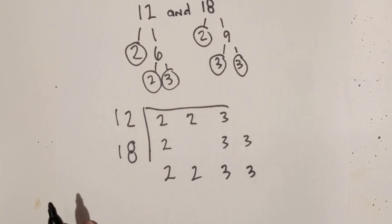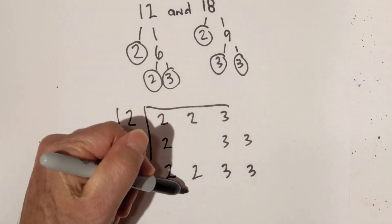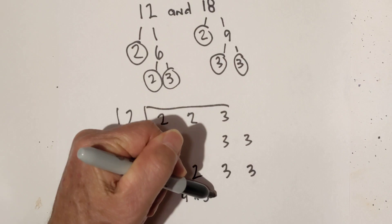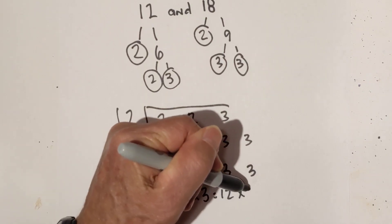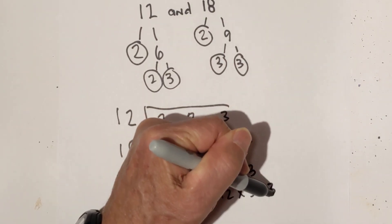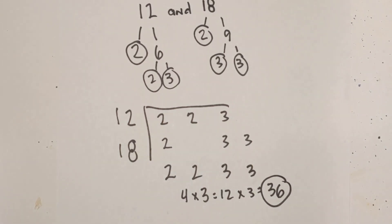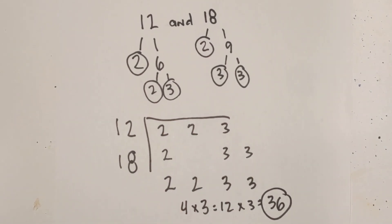You can barely see that. Now all we do is multiply all this together. 2 times 2 is 4, times 3 is 12, times 3 equals 36. So the LCM of 12 and 18 is 36.